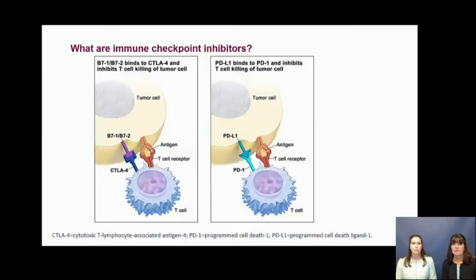Malignant cells present different antigens from healthy cells that identify them as targets for the immune system. However, malignant tumors have evolved a number of mechanisms that allow them to evade recognition by the immune system. They can down-regulate expression of tumor antigens on the cell surface so they're no longer detected as foreign entities. They can up-regulate expression of other proteins on the cell surface that induce immune cell deactivation, and they can induce cells in the tumor microenvironment to release cytokines that suppress immune responses while promoting tumor cell proliferation and survival.